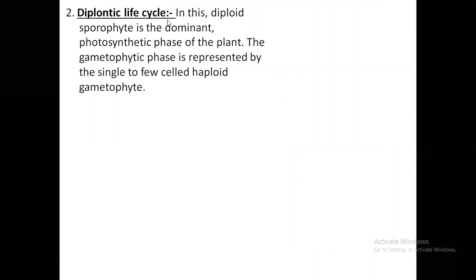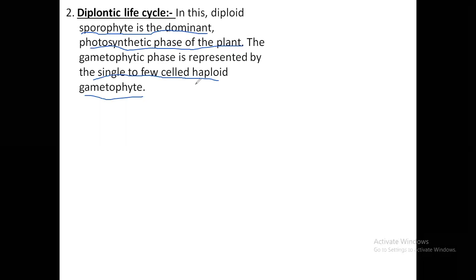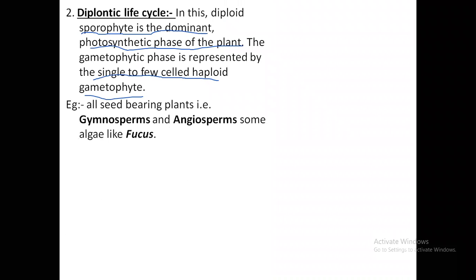The next kind of life cycle is called diplontic. As the name suggests, the sporophytic phase — which is diploid — is dominant. It is also the photosynthetic phase of the plant. The gametophytic phase is present either as a single cell, the zygote, or limited to a few cells. The sporophytic phase is very prominent whereas the gametophytic phase is very short-lived and temporary — limited to one-cell zygote or sometimes a few-celled structure.